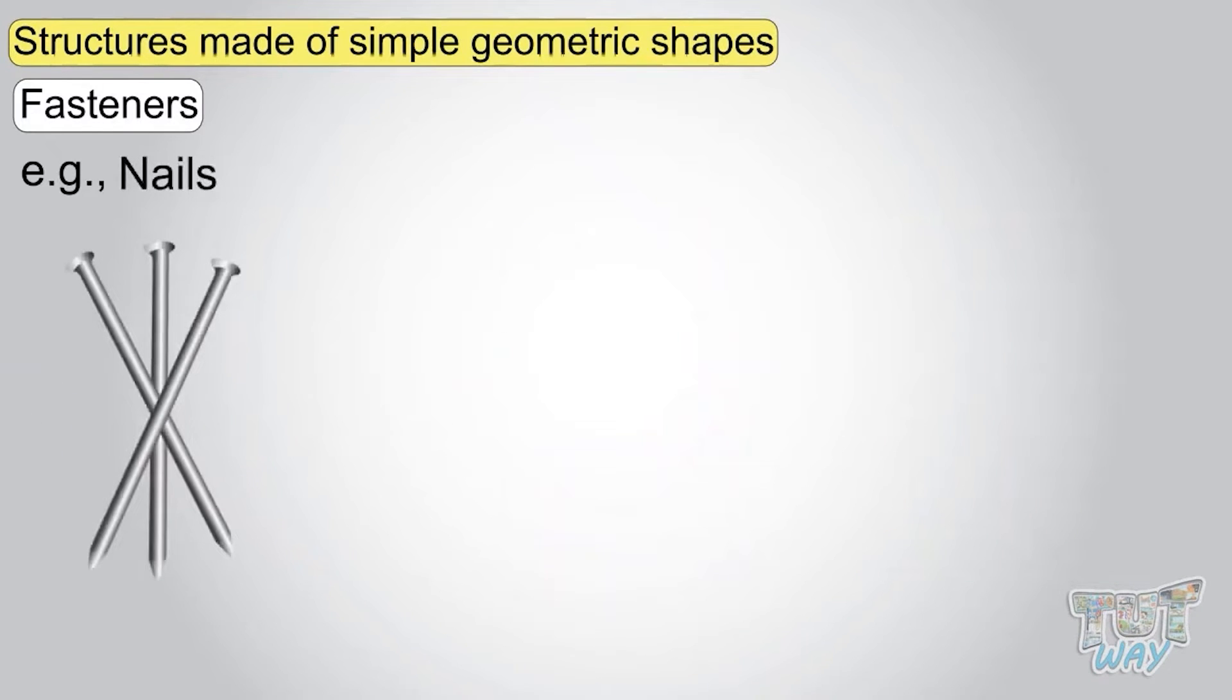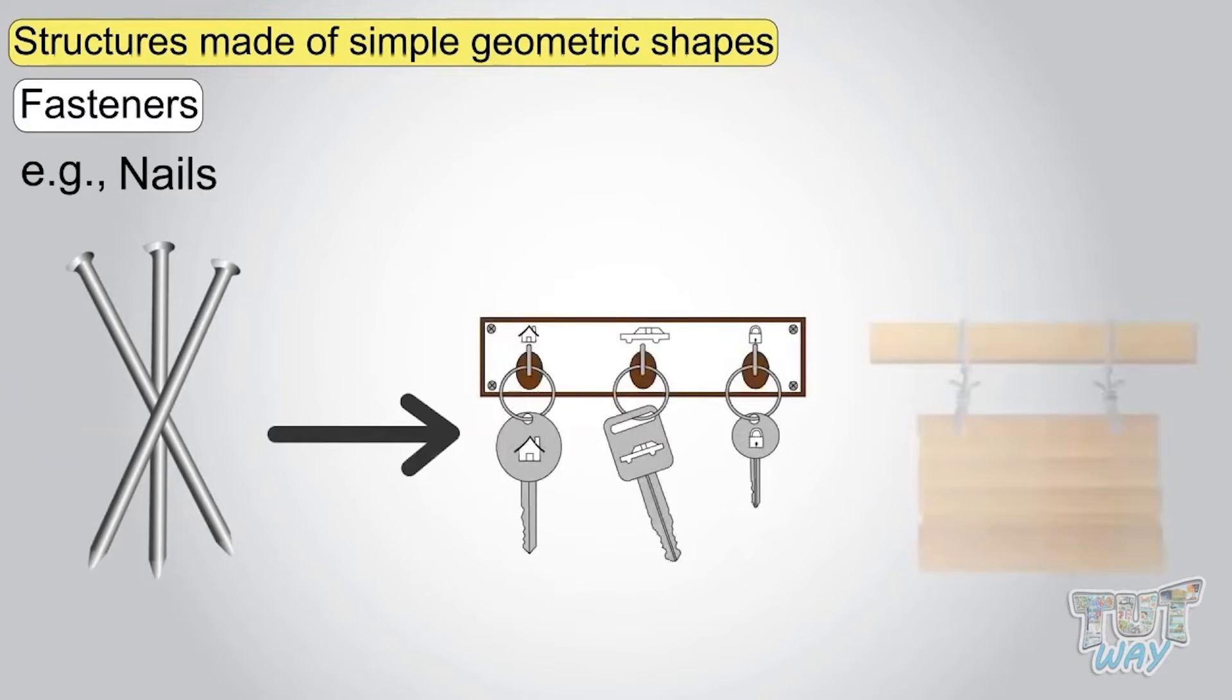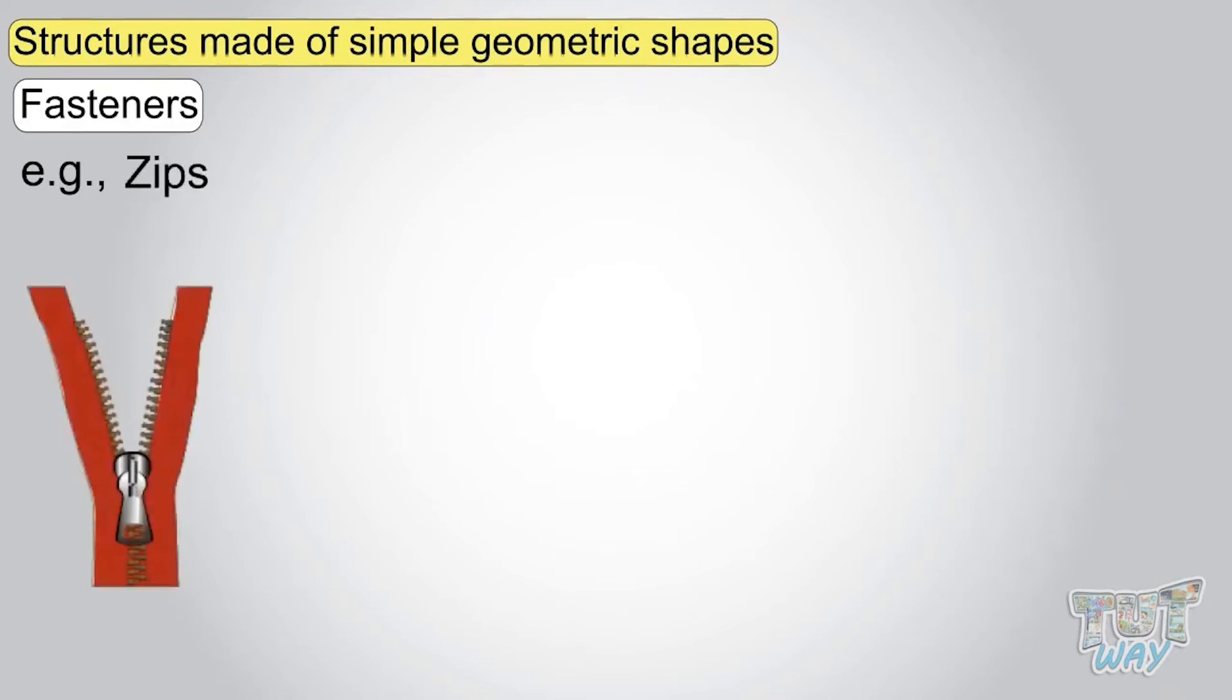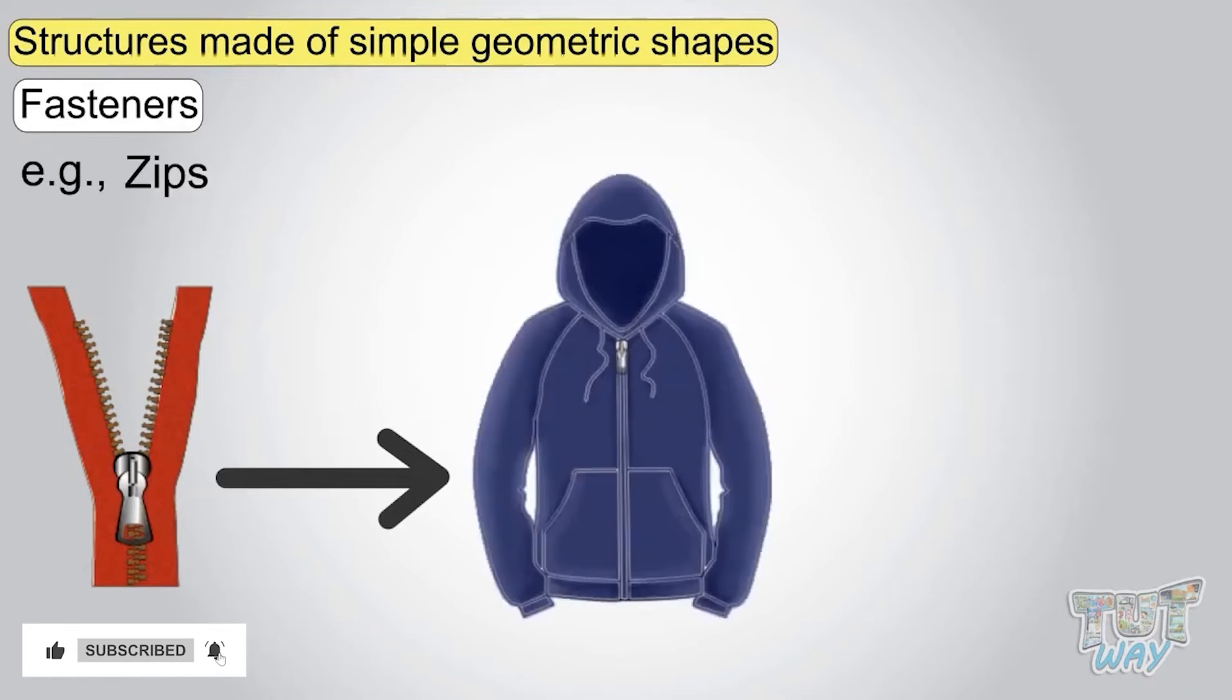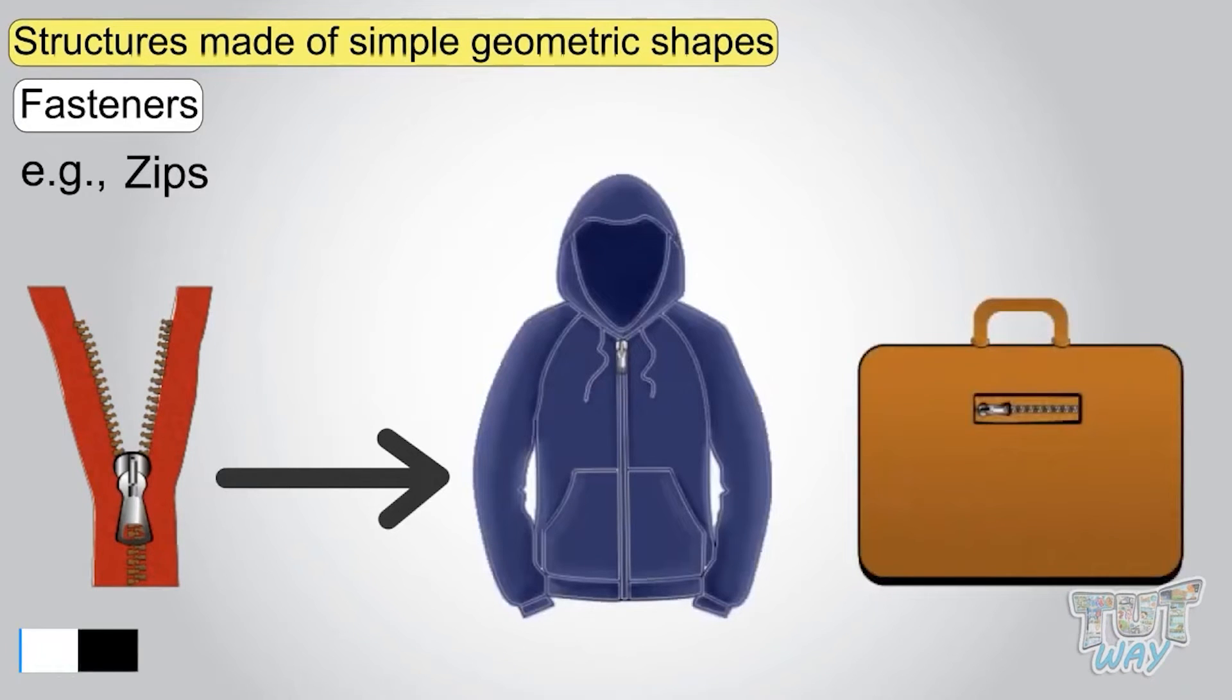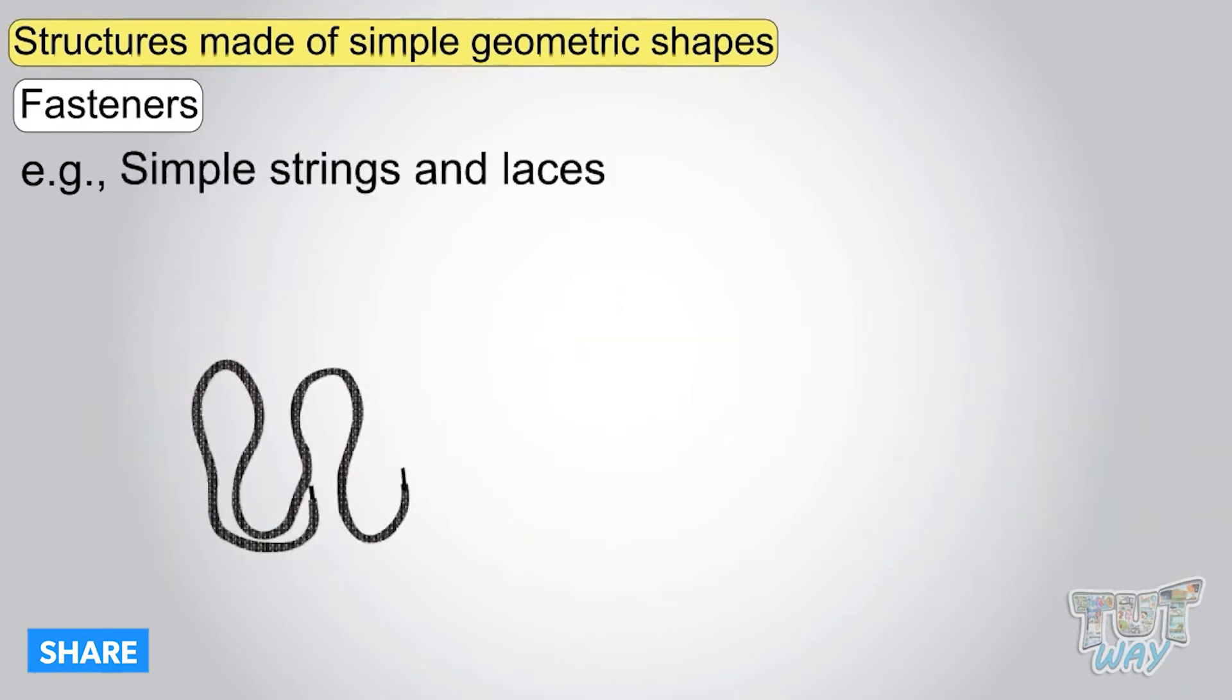Nails are also simple fasteners used to hang things on walls and boards. Zips. Zips are another important fastener used in clothes and purses. Simple strings and laces can be fasteners in shoes.